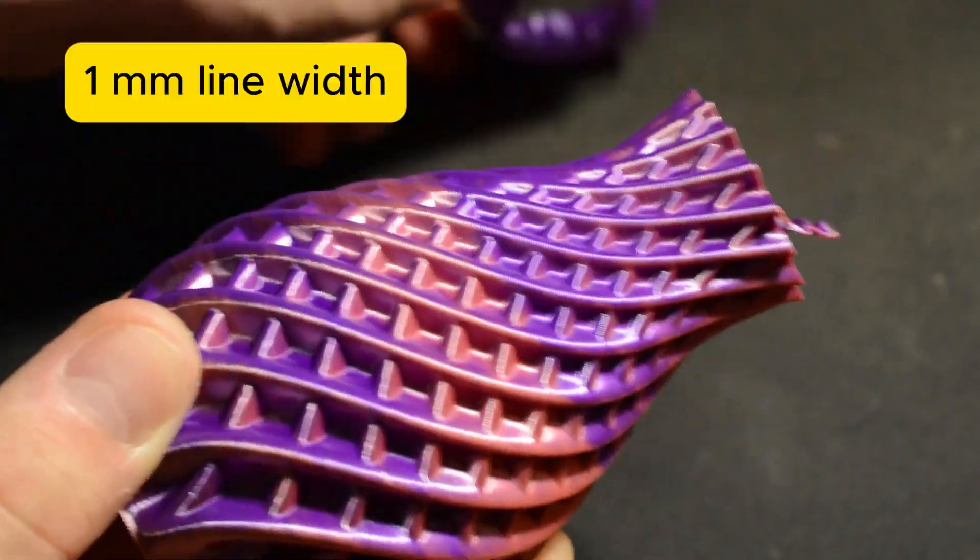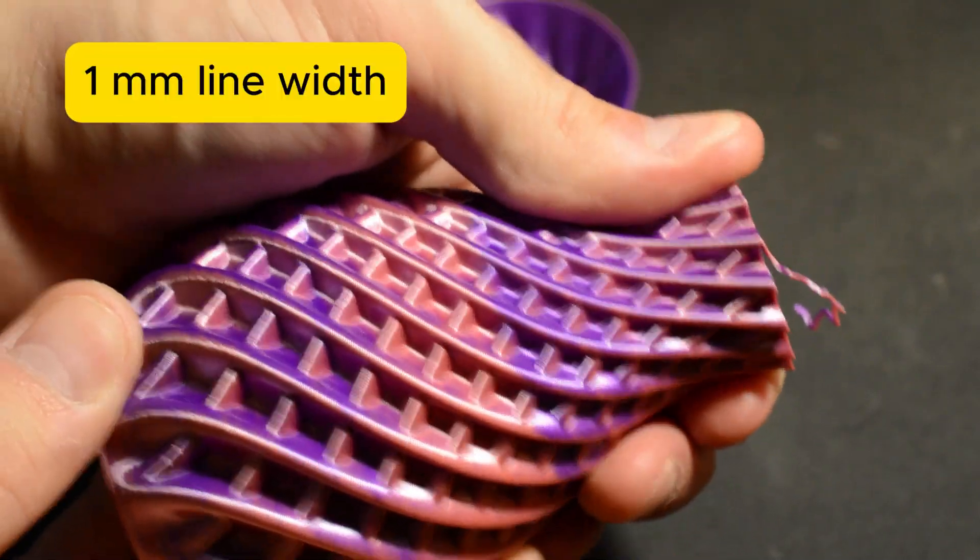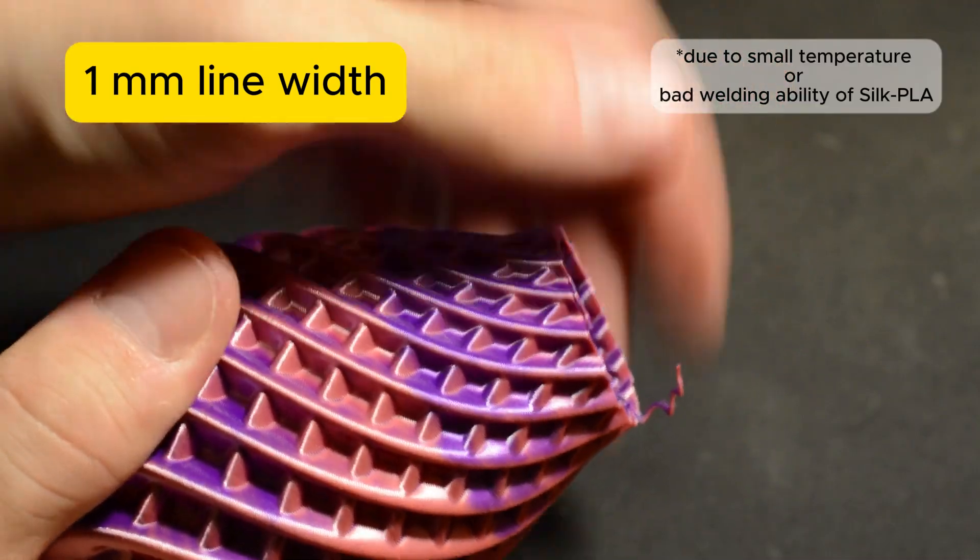For example, this vase was printed with 1 mm wall and I was using Silk PLA. As you can see, it's not very strong, but very pretty.